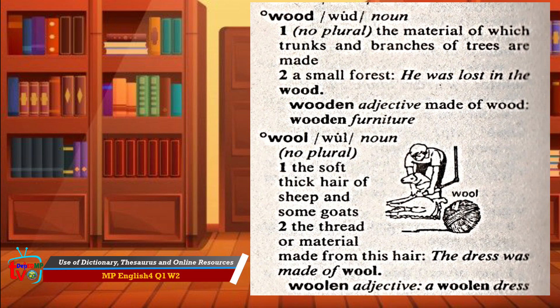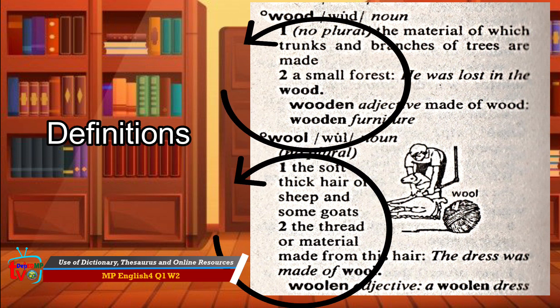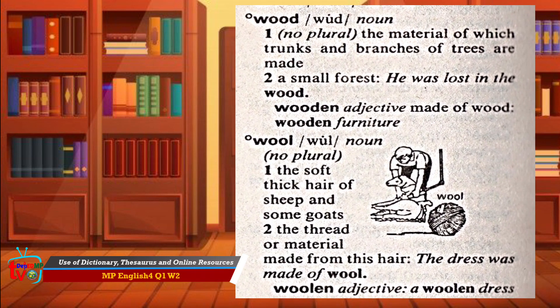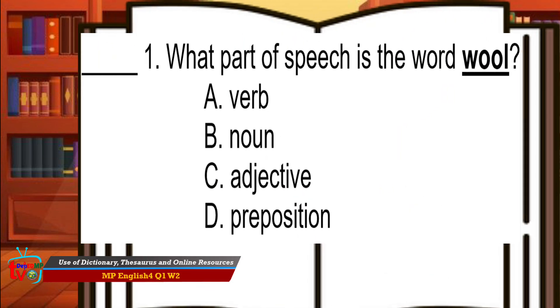Great job for coming this far — you are almost done! Before we end our lesson, do the following activity. For activity one, let's study the picture. Here is a clip from a printed dictionary. We can see the two entry words: wood and wool. They are both nouns and have two different definitions depending on how each is used in a sentence. Base your answer from the picture. What part of speech is the word wool? Great! The answer is letter B — it is a noun.